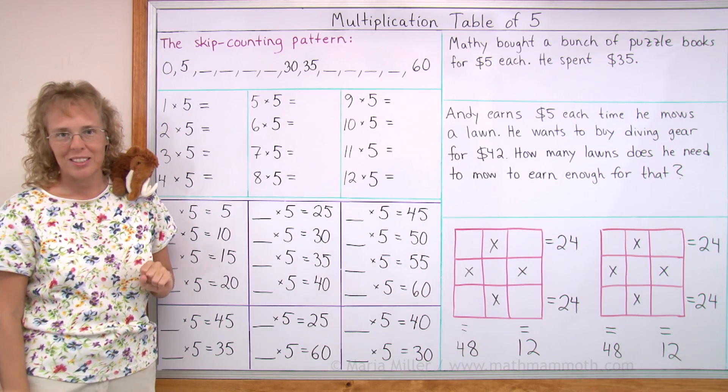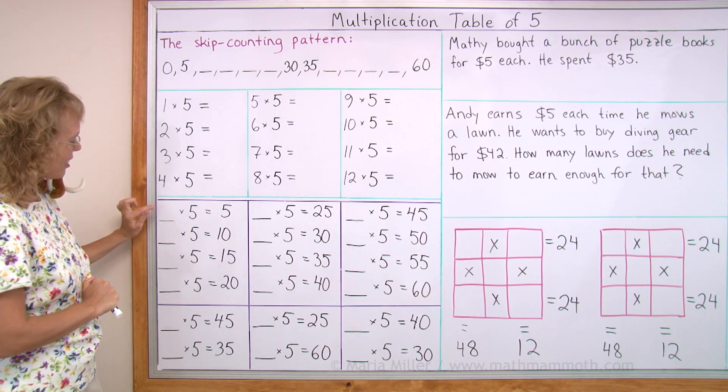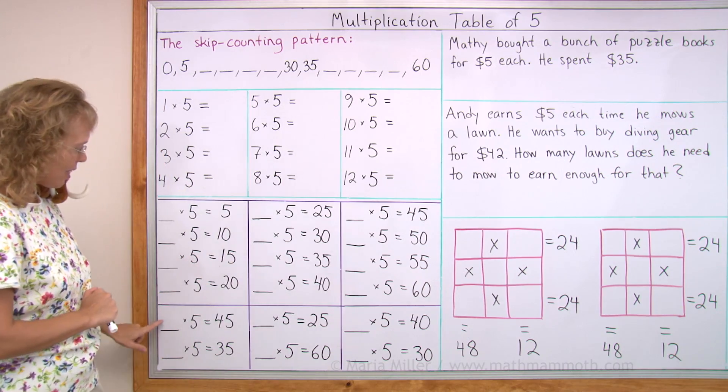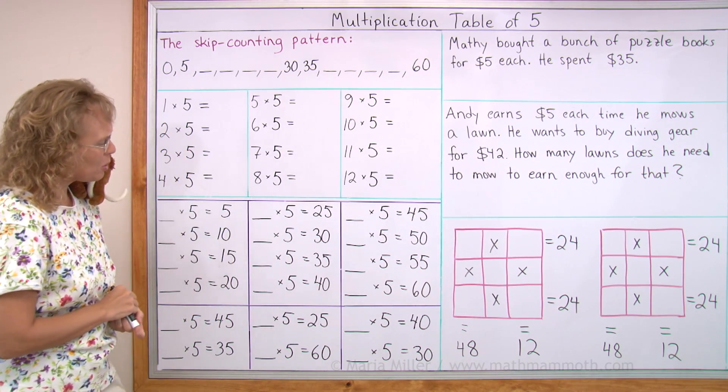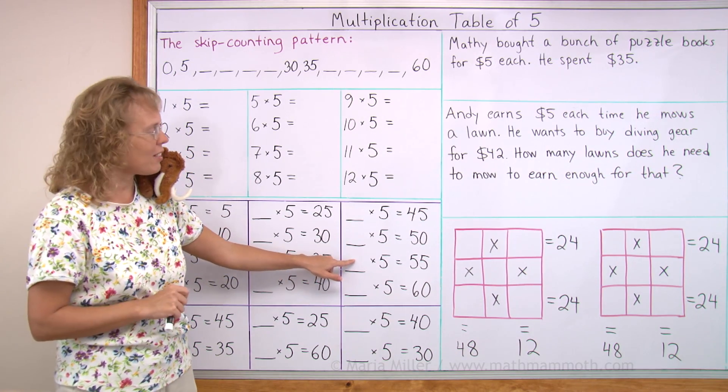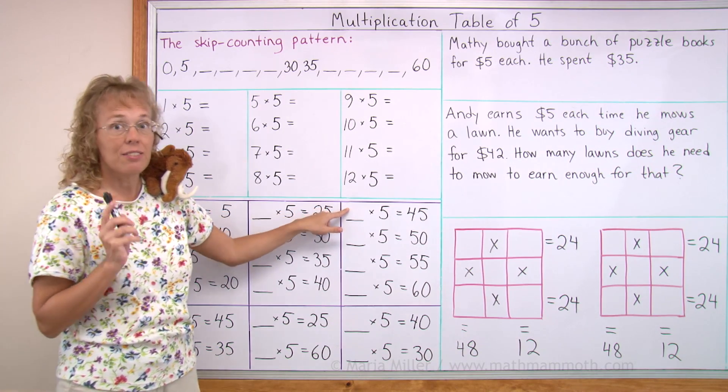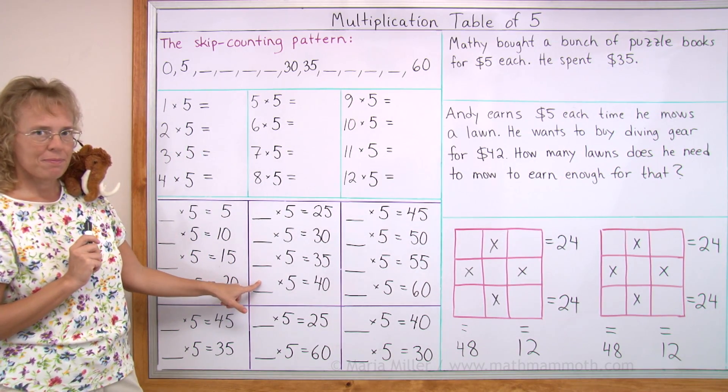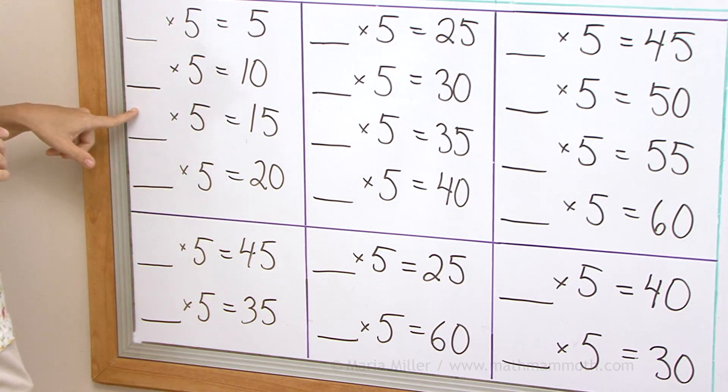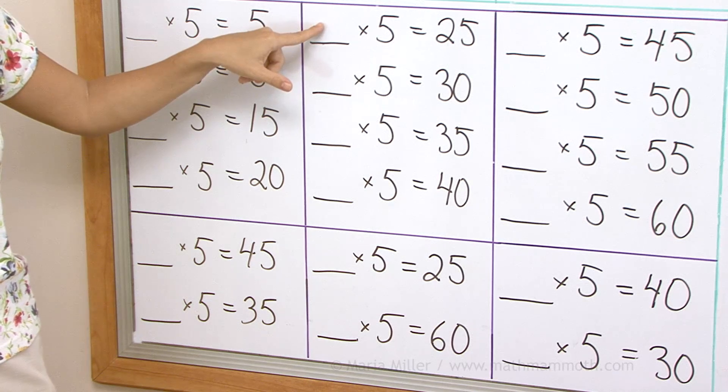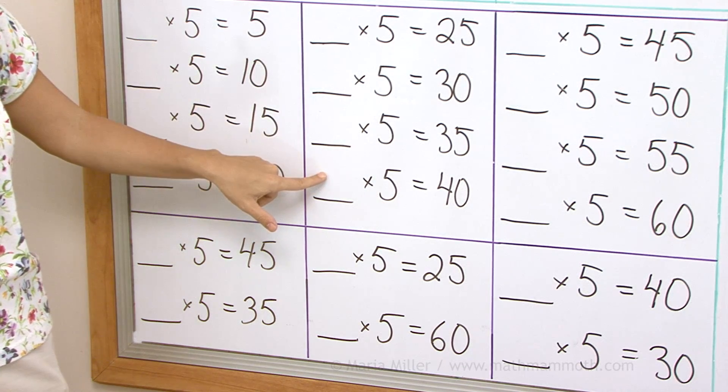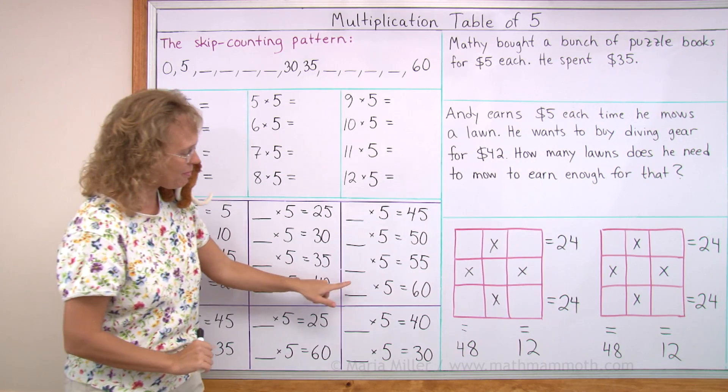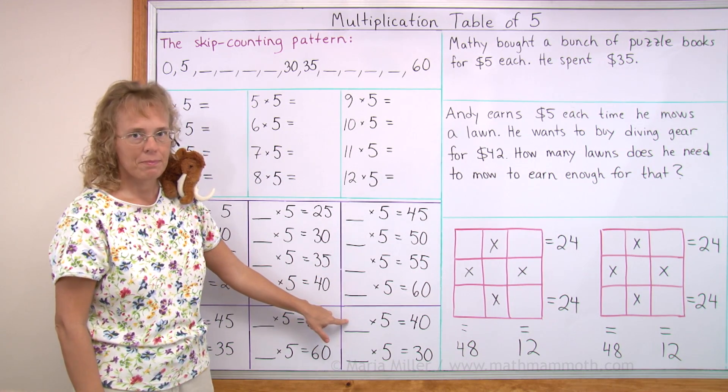Now, as usual, we're going to practice the table backwards. And as you already know, the answers here are 1, 2, 3, 4, 5, 6, 7, 8, 9, 10, 11, 12. But I have some here also that are in scrambled order. So, how many times 5 is 55? 11. How many times 5 is 45? This is just 5 less than 50, so that's 9 times 5. How many times 5 is 40? 8. How many times 5 is 15? 3. How many times 5 is 25? 5. How many times 5 is 40? 8. And this one? 6.